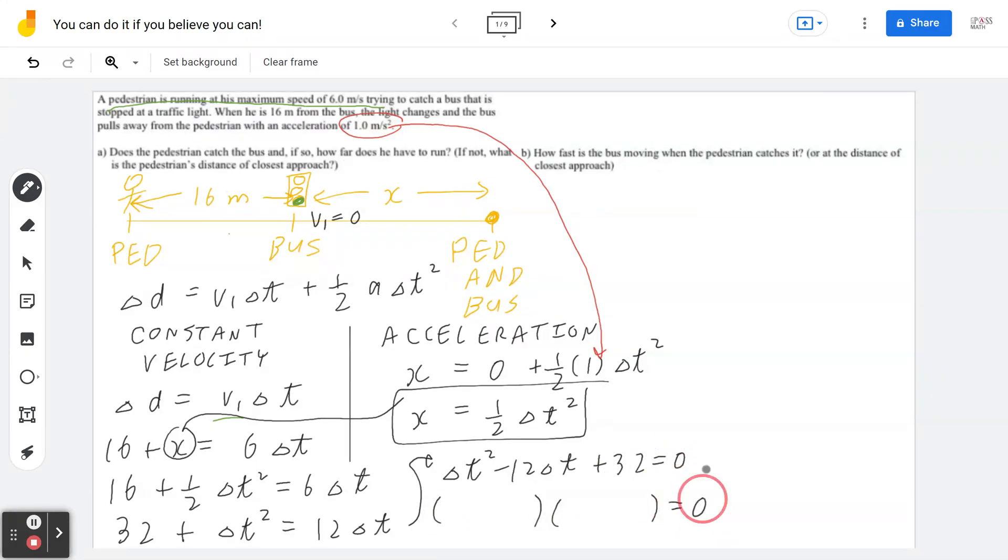You always start with factoring. And if factoring does not work, you can move forward to the quadratic formula. But in this case, by inspection, if you look at the factors of 32 such that it will give you a sum of negative 12, I would say t minus 4 times t minus 8 seems to work. This implies time is going to be 4, 4 seconds.